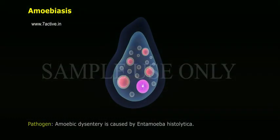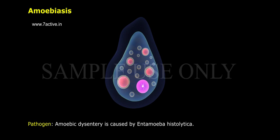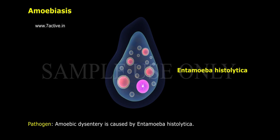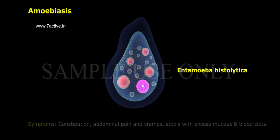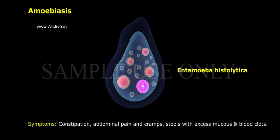Amoebiosis. Amoebic dysentery is caused by Entamoeba histolytica. Symptoms include constipation, abdominal pain and cramps, and stools with excess mucus and blood clots.